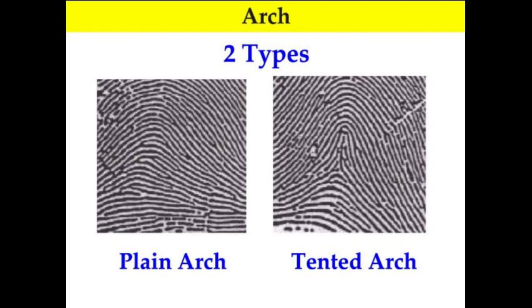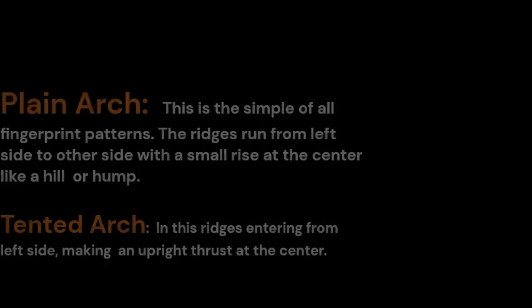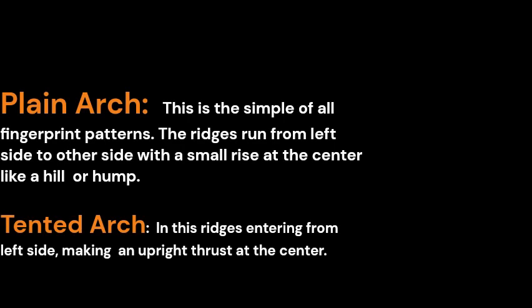Arches can be distinguished into two types: one is called the plain arch and another is called the tented arch. They are distinguished based on the flatness of the curve of the ridges entering from one side to the other. In a tented arch, the ridges make an upright thrust at the center, as you can see.